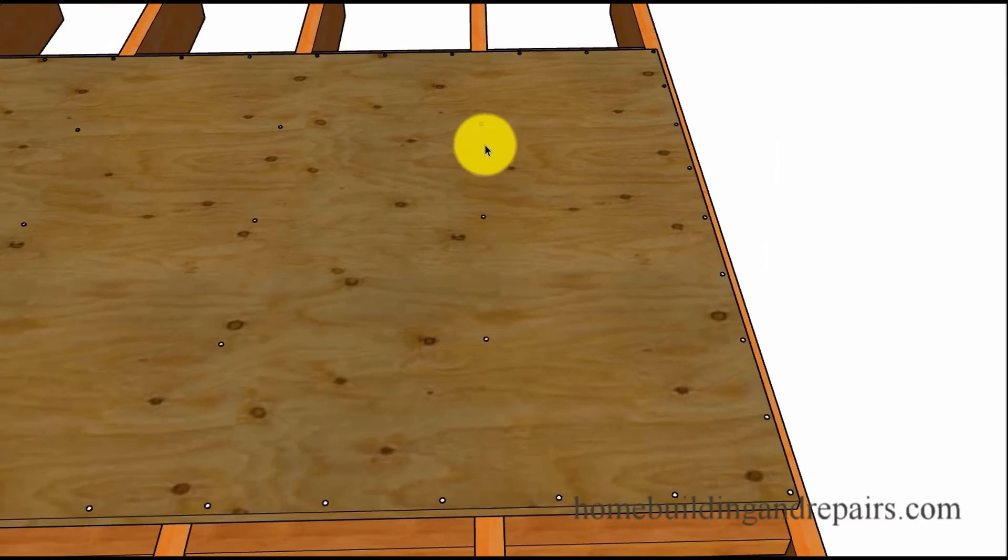In the field it's 12 inches on center. You could start from here and go in 12 inches. It's usually six inches around the perimeter or the edges, and this is on square edge with blocks and 12 inches in the field.